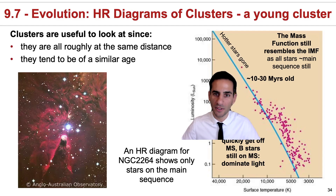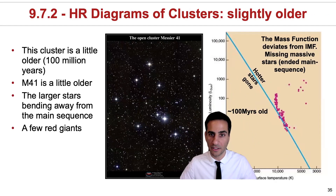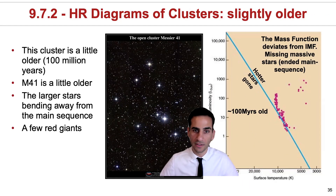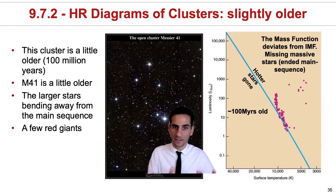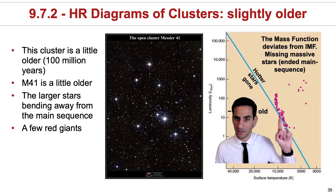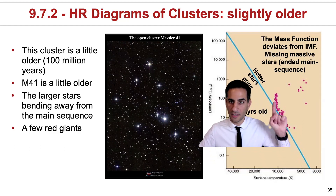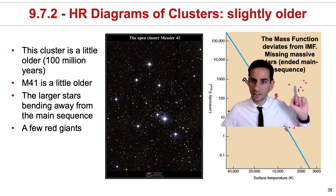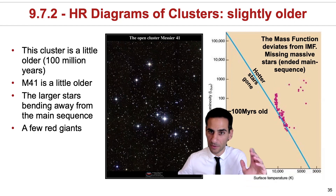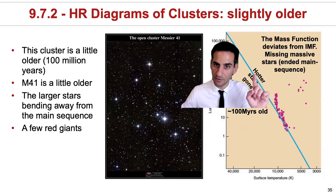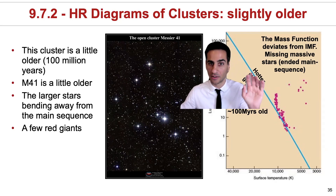If we move to clusters that are just a little bit older — instead of 10 million years, if they are 100 million years, like M41 that you can see here in the image — then the picture starts shifting. We can still see lots of stars in the main sequence, but we're also seeing the main sequence bending and we can already see a few red giants. This means that enough time has passed for hot stars to be gone; they have evolved away from the main sequence, and many of them went supernova and are no longer here.